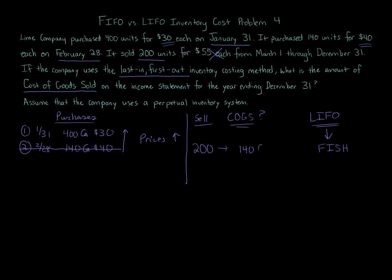So 140 at $40. Then we're going to go and continue over to layer one. Well, we sold 200 minus 140 from layer two. We still need 60 from layer one. So layer two goes first. Then layer one, we need 60 at $30. And this is going to give us our cost of goods sold. Because 140 times 40 is going to be 5,600. And 60 at 30 is going to be 1,800. We add those two numbers together, and we get $7,400. And that is our cost of goods sold. And that's the answer to the question.